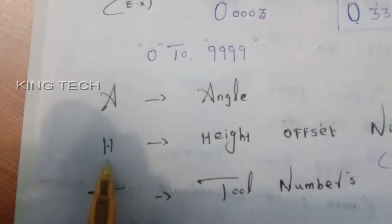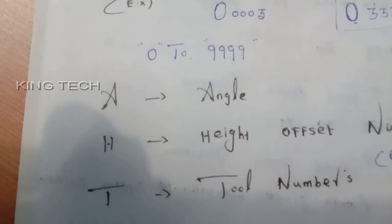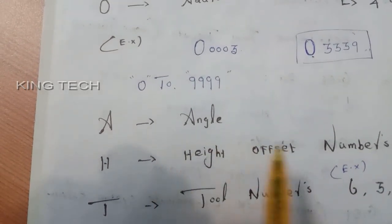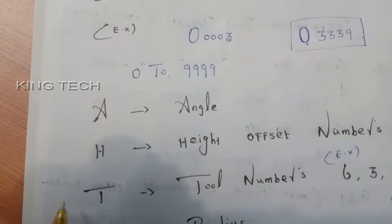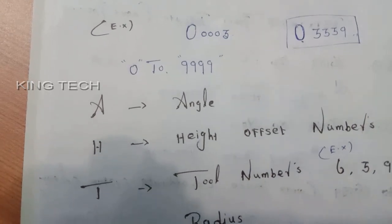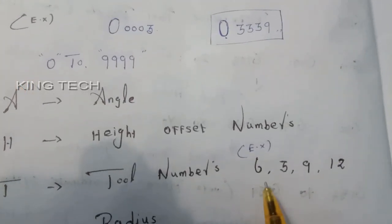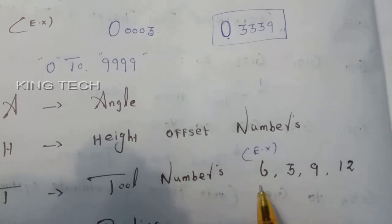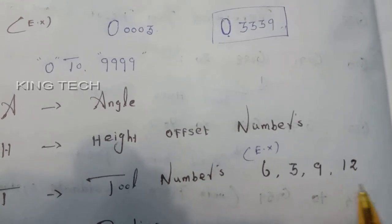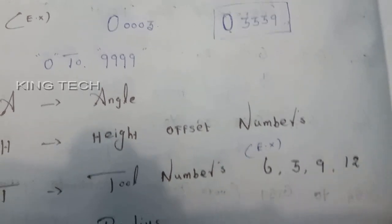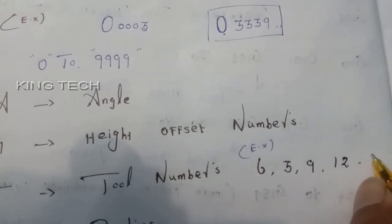H means height offset numbers. T means tool number. For example, you need tool 6, 3, 9, 12.